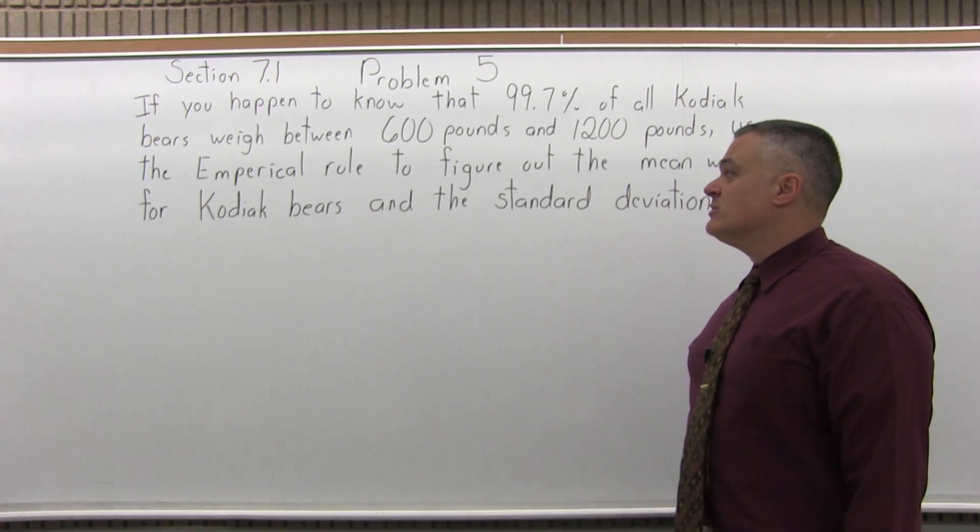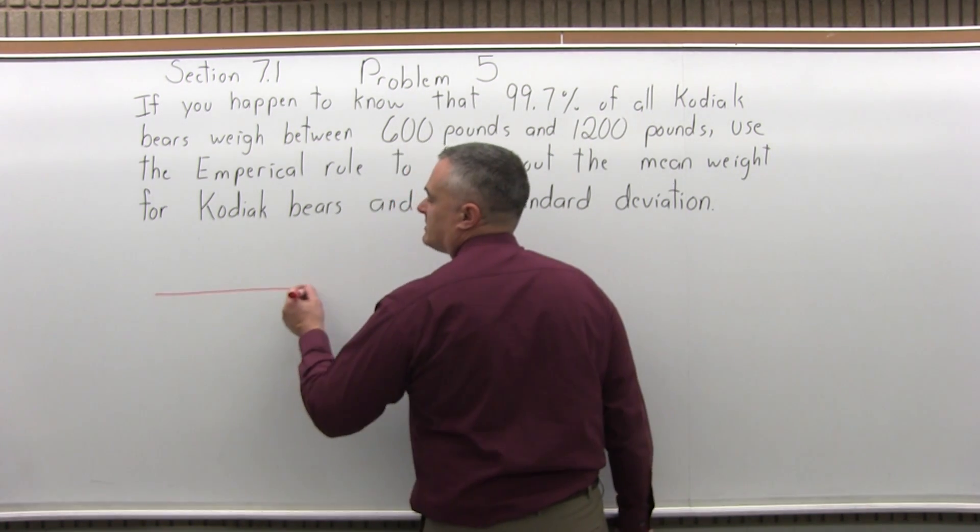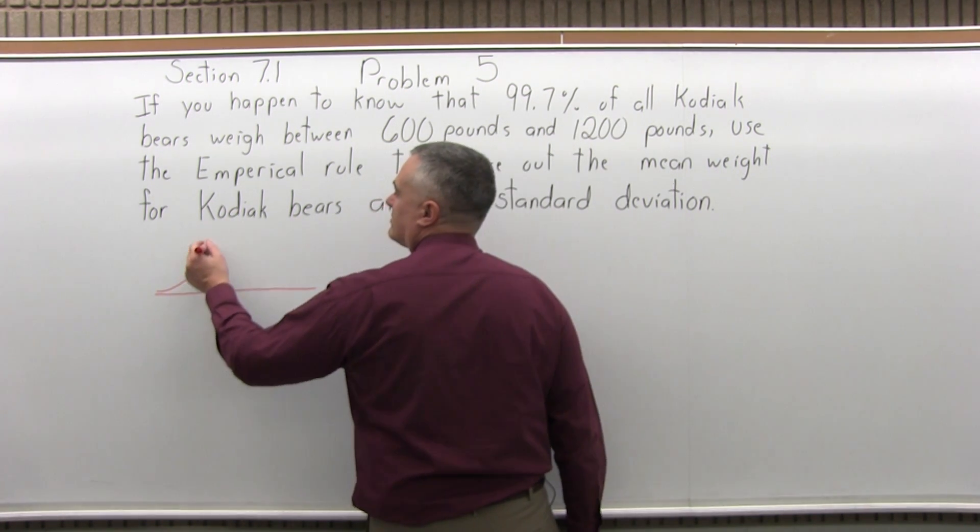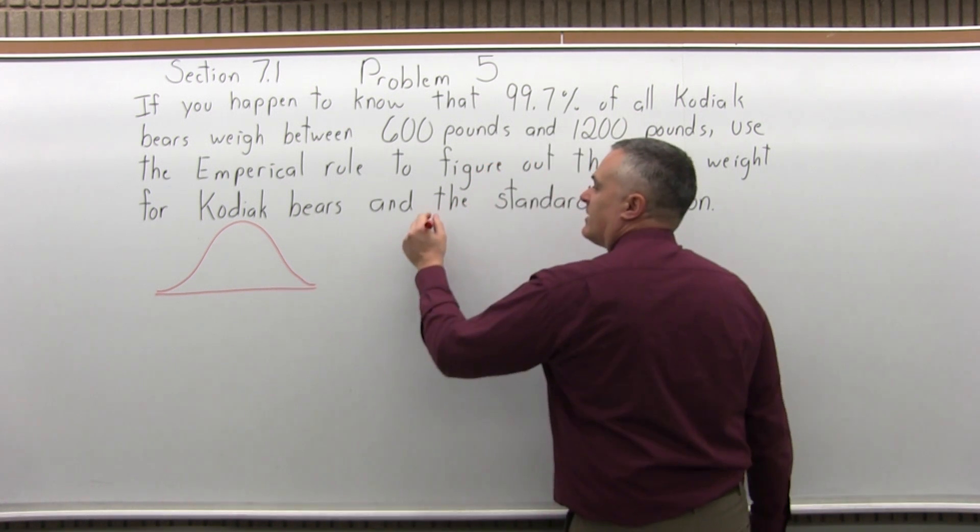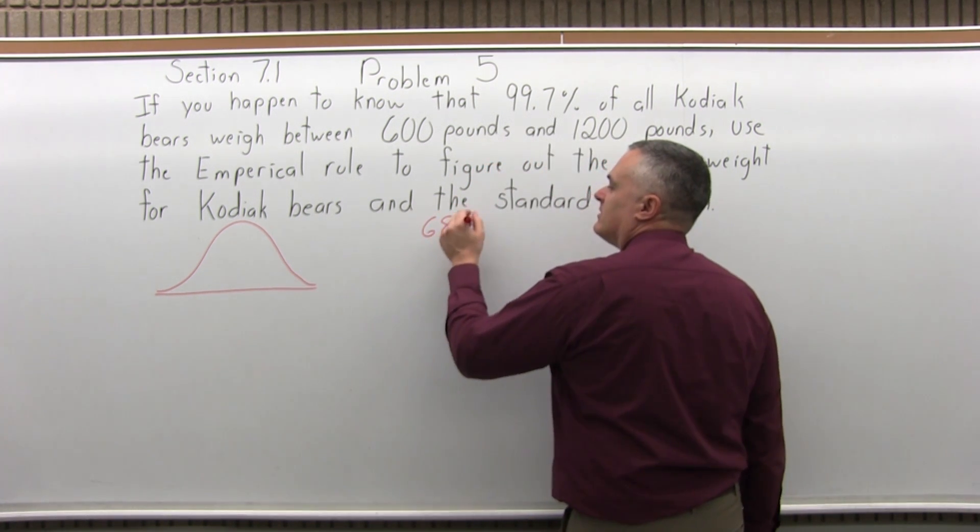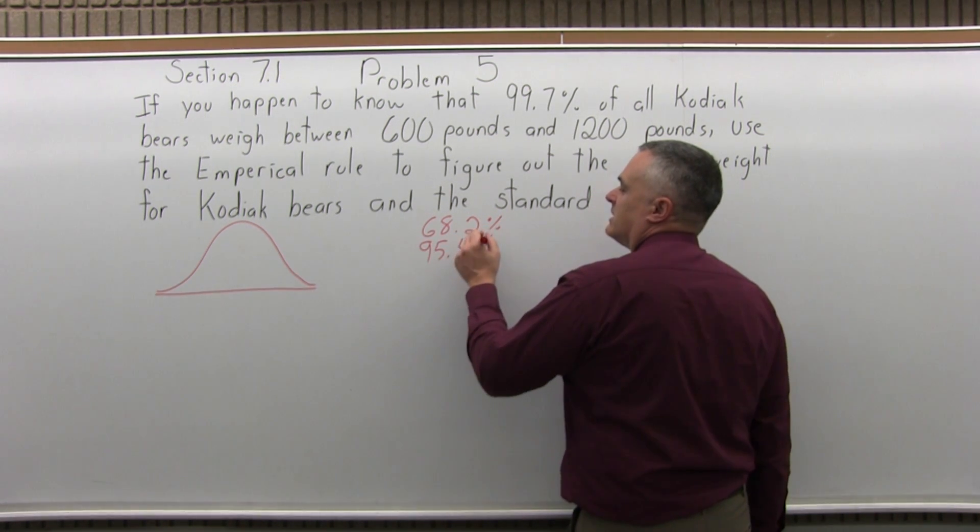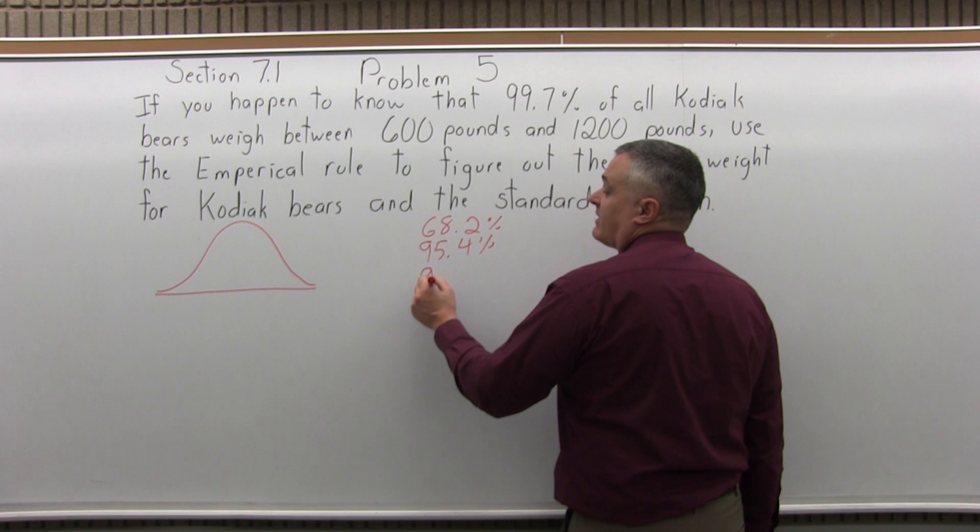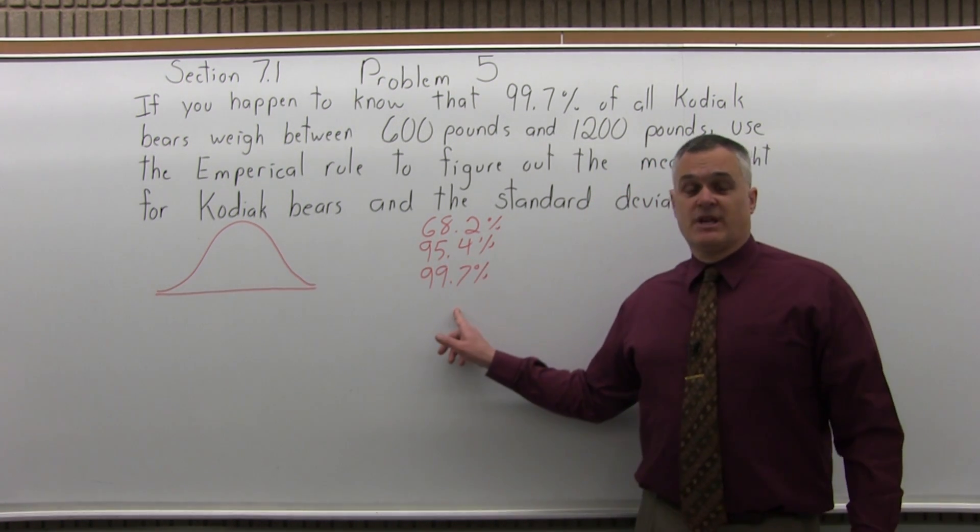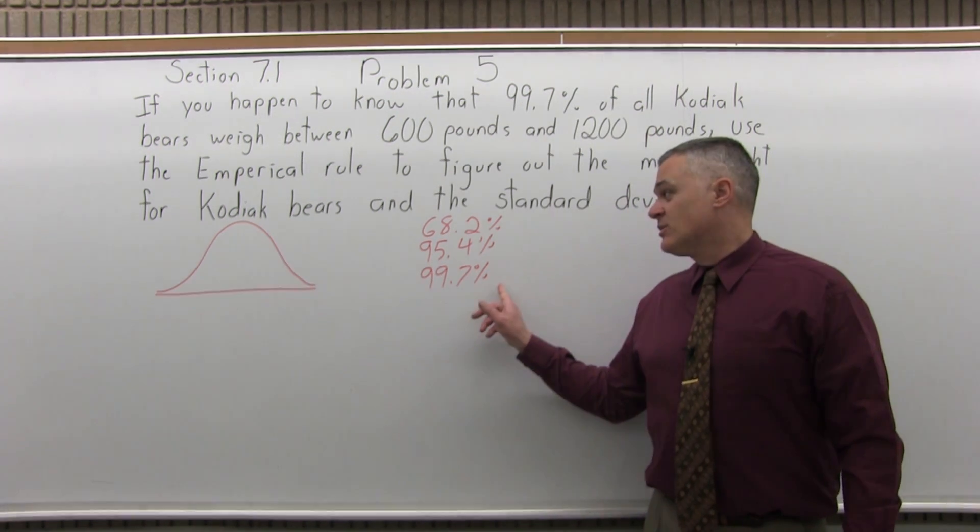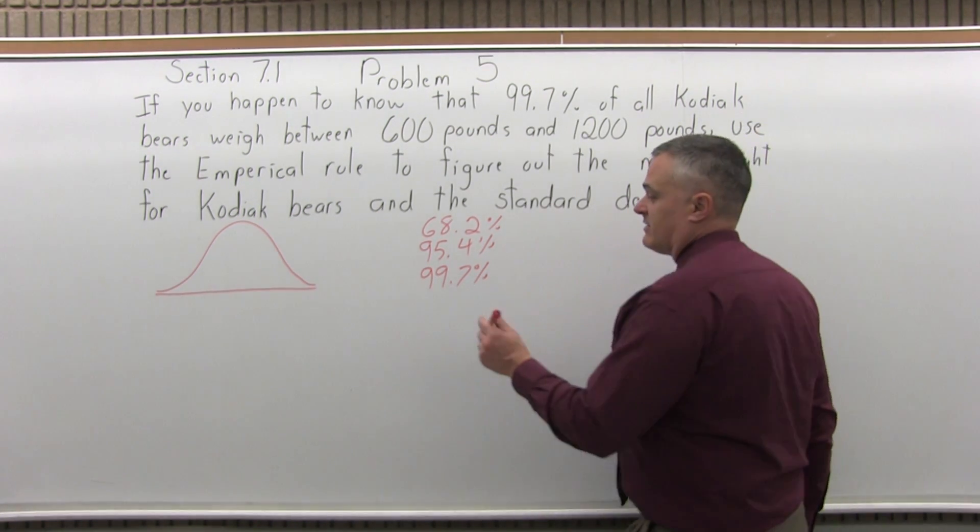The fact that we're using the empirical rule tells me that we have some data that's normally distributed, because that's what the empirical rule is for. There are three intervals for data for the empirical rule: 68.2%, 95.4%, and 99.7%. The question asks about the bigger interval, and this is the one where the interval is three standard deviations on either side of the mean.